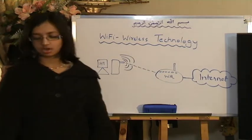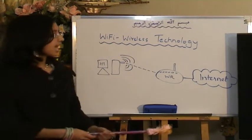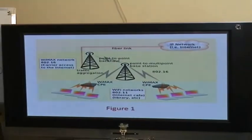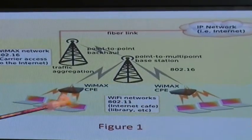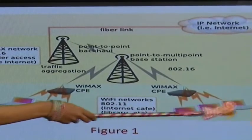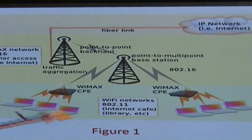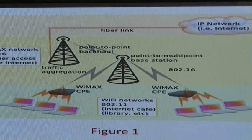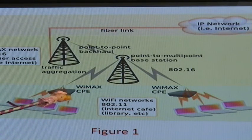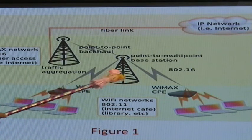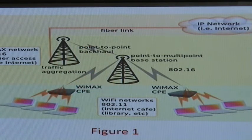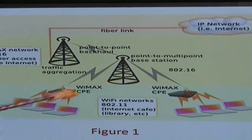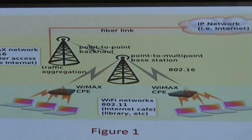For a better understanding of Wi-Fi and WiMAX, let's look at a picture. In this picture, as you can see, there are two networks below, each consisting of three laptops. These laptops are connected to a device labeled as WiMAX CPE. CPE stands for Customer Premise Equipment. This WiMAX device is connected to a mobile tower, which is known as a base station in mobile networking language.